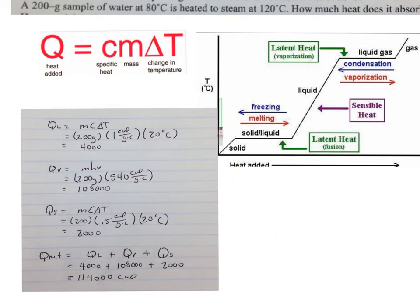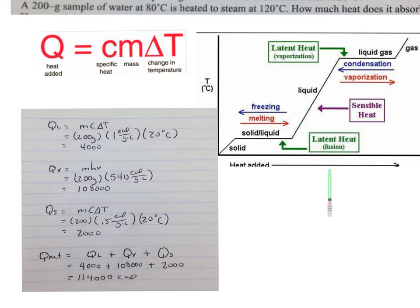Having the phase change chart in front of you as you solve problems and being able to visually see how far you are moving through the chart will be very beneficial in knowing how far into the Q net equation you need to go — where you start and where you end. Hopefully this video has helped make these problems easier and made you feel more comfortable solving specific heat problems using heat of vaporization and heat of fusion.